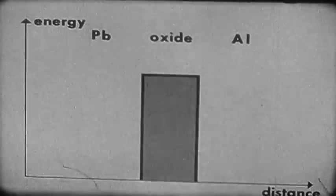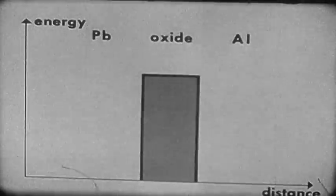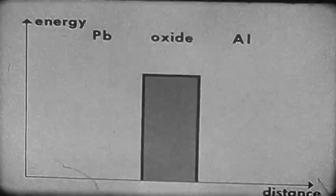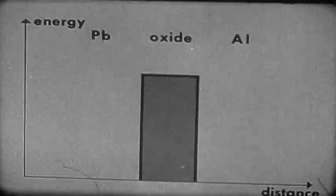Now, as we've told you before, there are electrons in each of the two metallic layers which are free to move around. These electrons occupy a certain set of closely spaced energy levels.